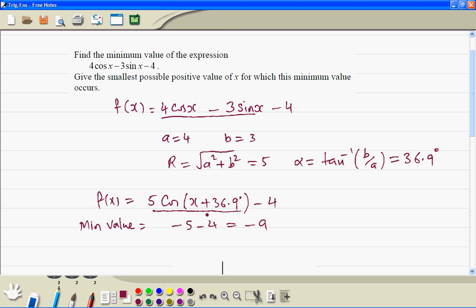Now the cosine graph is minimum, so this is the cosine graph, so it's minimum when the angle is 180 degrees.